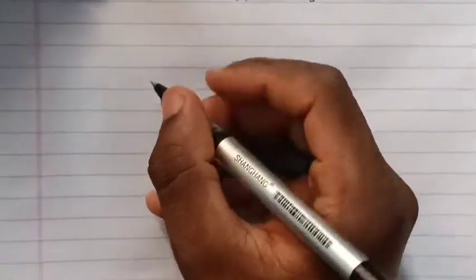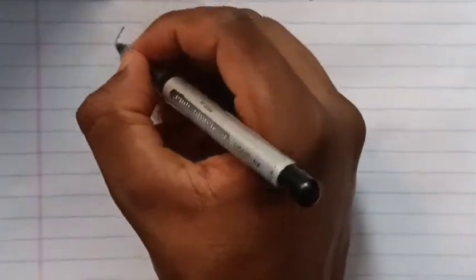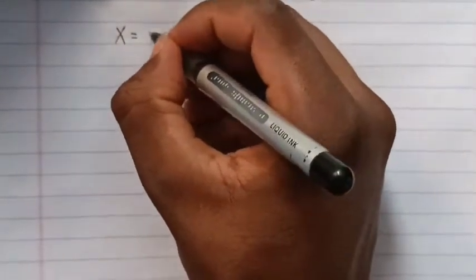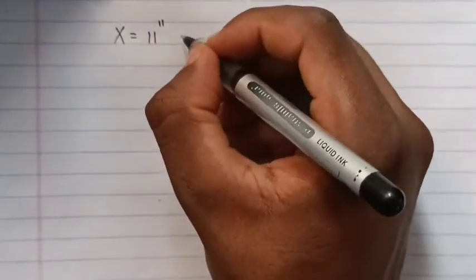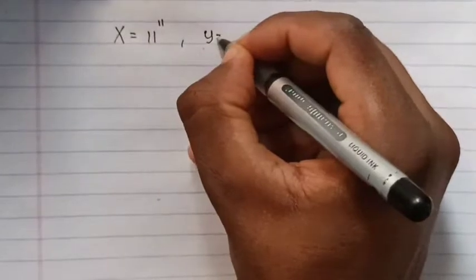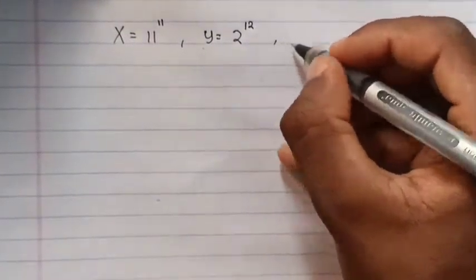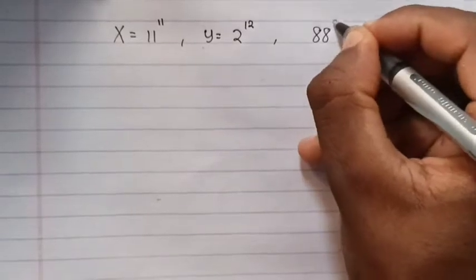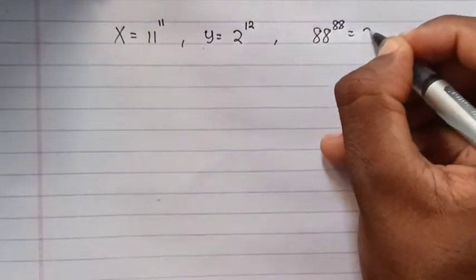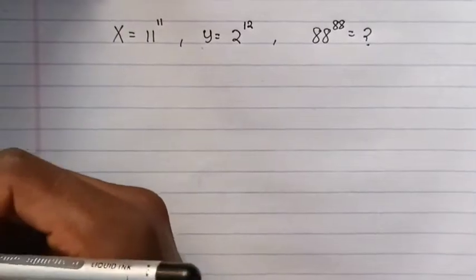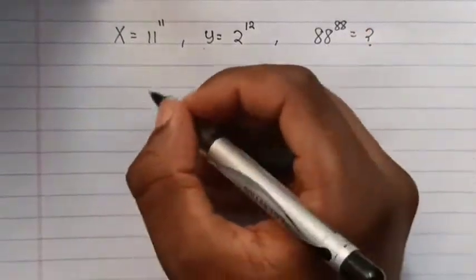Hello everyone. We have been given this equation: x equals 11 and y equals 2 to the power of 12. Then we have to find 88 to the power of 88. Let's start to simplify this one.